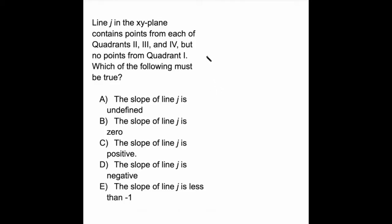Line J in the XY plane contains points from each of quadrants 2, 3, and 4, but no points from quadrant 1. Which of the following must be true?